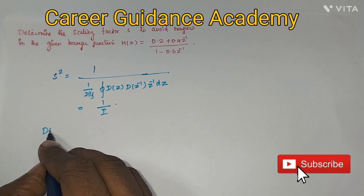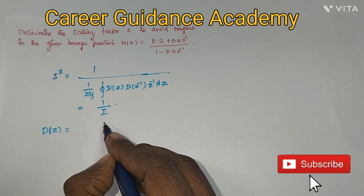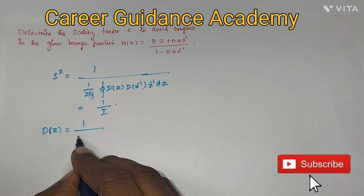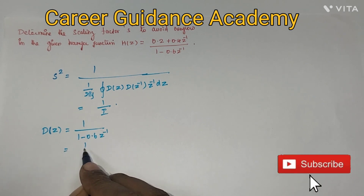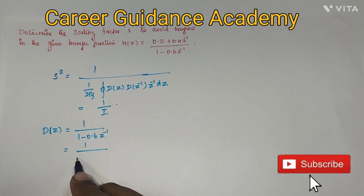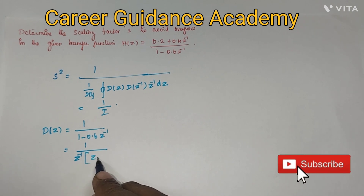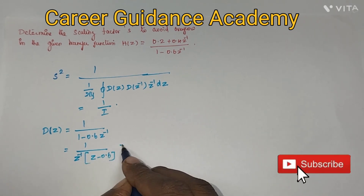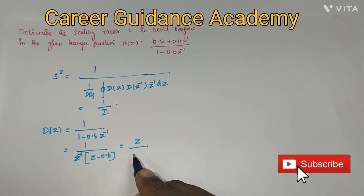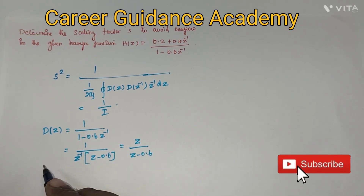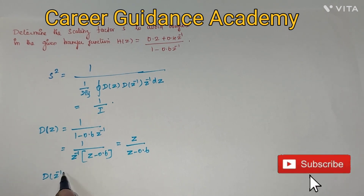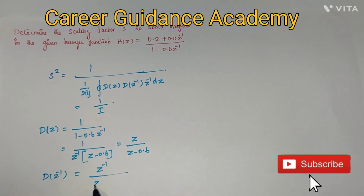I'm going to find D(z), that is the denominator polynomial, which is 1 divided by (1 minus 0.6 z⁻¹). Taking z⁻¹ common outside gives z minus 0.6, so D(z) = z divided by (z minus 0.6). Similarly, D(z⁻¹) = z⁻¹ divided by (z⁻¹ minus 0.6).